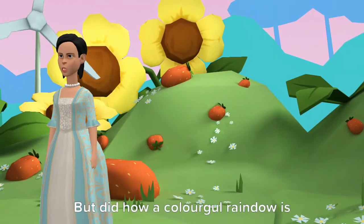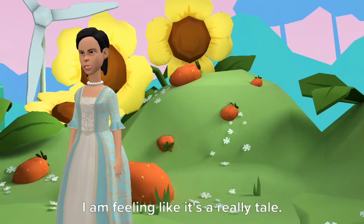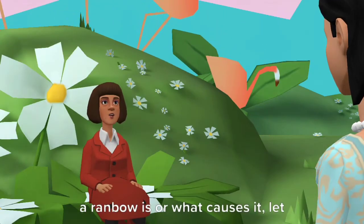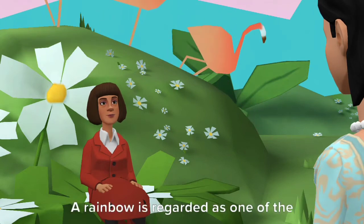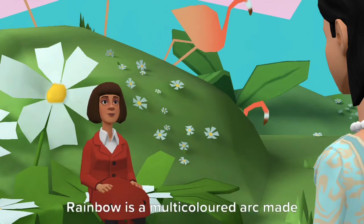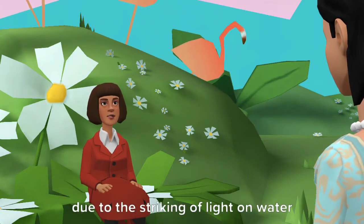But Dee, how is a colorful rainbow seen? How's it made? I am feeling like it's a real tale. If you have no idea at all about what a rainbow is or what causes it, let me tell you. A rainbow is regarded as one of the most spectacular light shows observed on earth. Rainbow is a multicolored arc made due to the striking of light on water droplets.